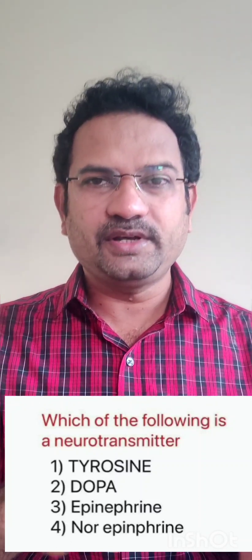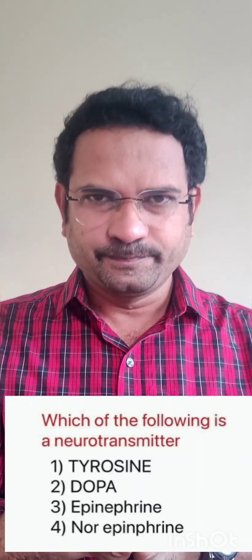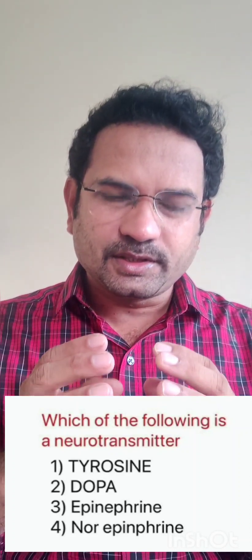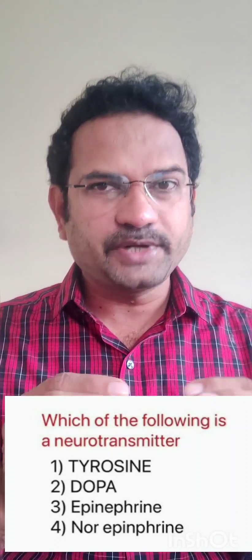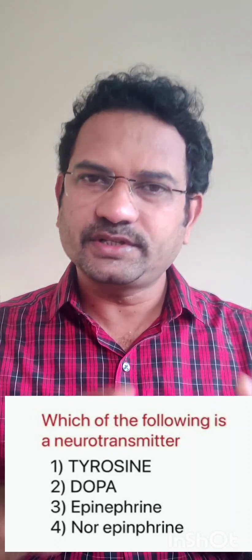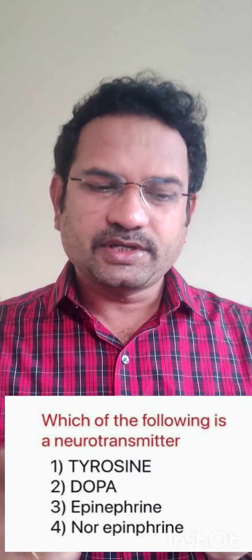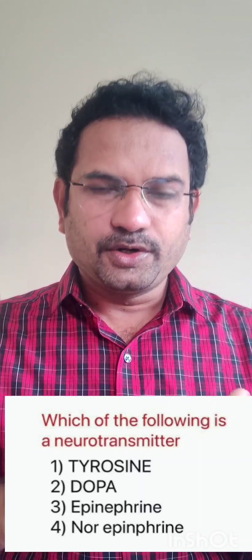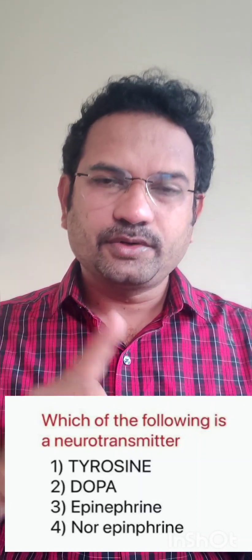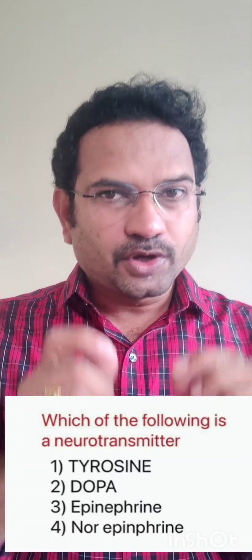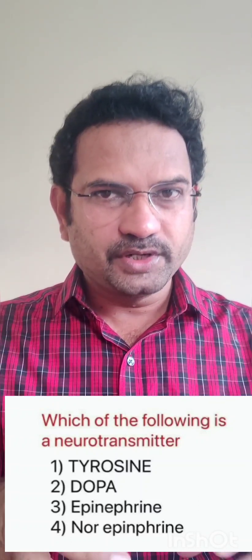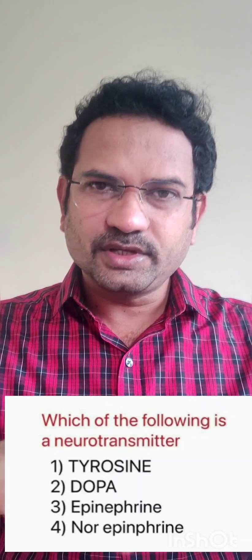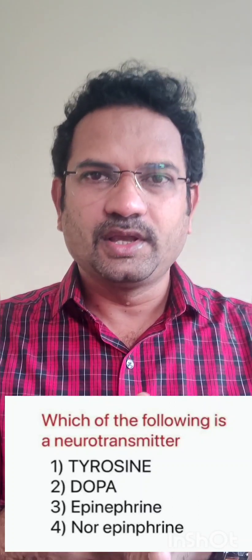The biosynthesis of the neurotransmitter starts from tyrosine. Tyrosine is an amino acid. Tyrosine is converted to dopa, dopa is converted to dopamine, and dopamine is converted to norepinephrine. This norepinephrine is stored in a vesicle and whenever there is a requirement, it is released into the synaptic cleft.